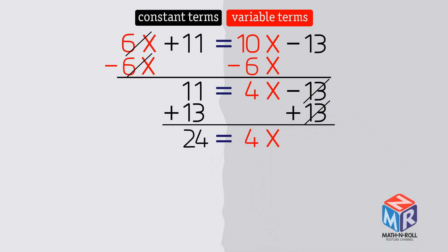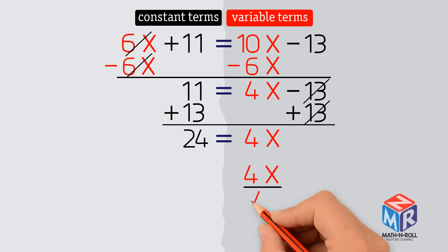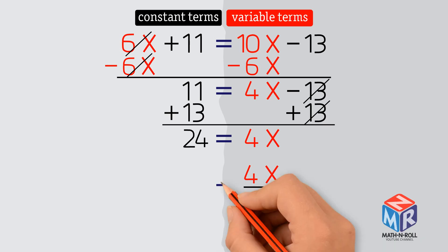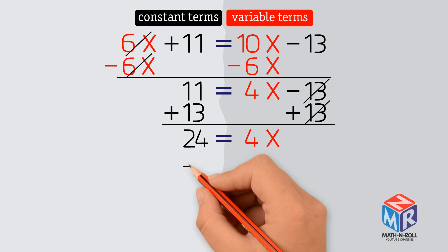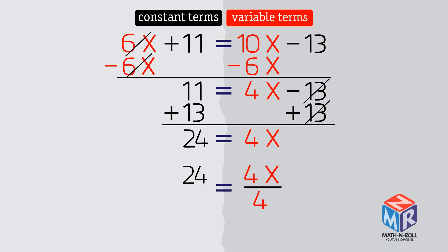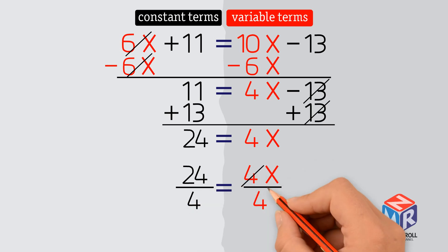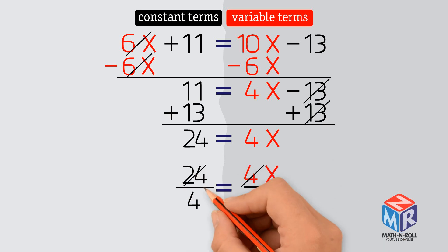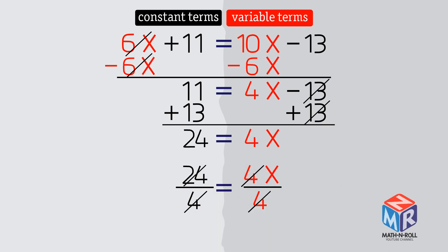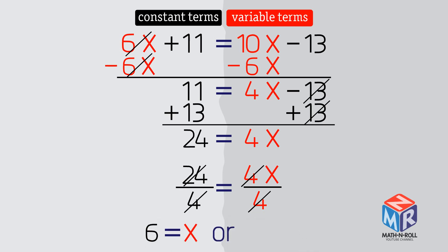The last step to get x alone, we divide both sides by 4. 6 equals x, or x equals 6.